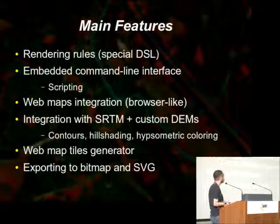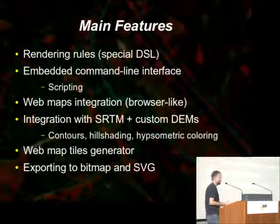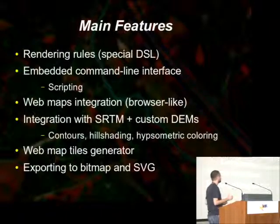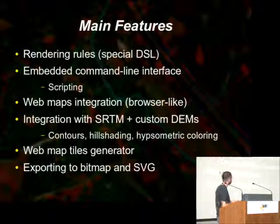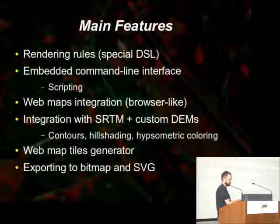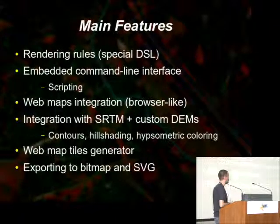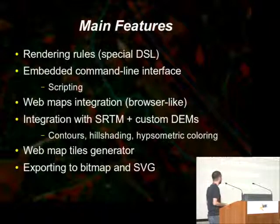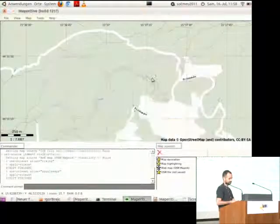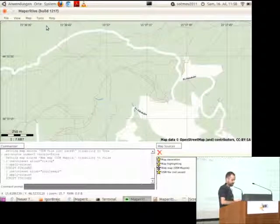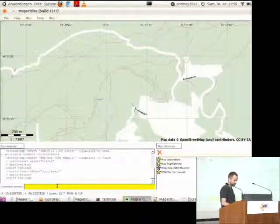Main features: we have rendering rules, which are a special domain-specific language. It's not very complicated, but I think you need to take an hour or so to understand how it works. The second thing, which I already mentioned, is the embedded command-line interface, which allows you to execute anything that Maparity provides through the command line, with some common functionalities also available through the menu. We can get a list of commands — you probably won't be able to see them, but there they are.